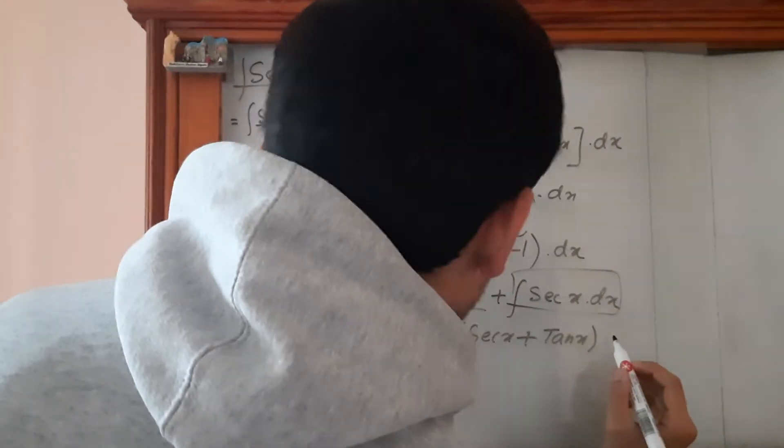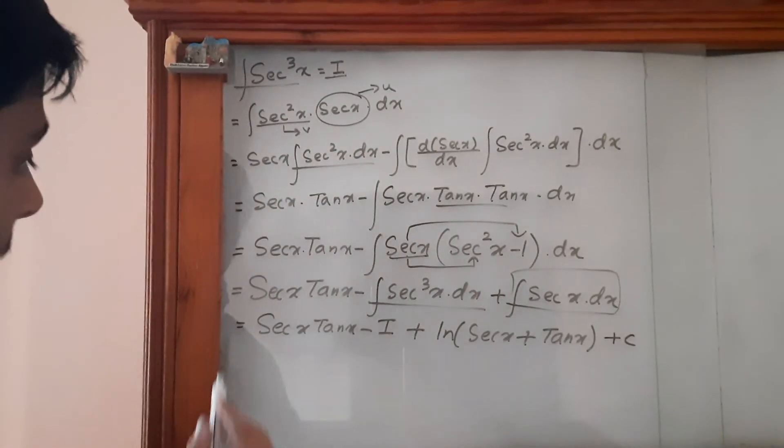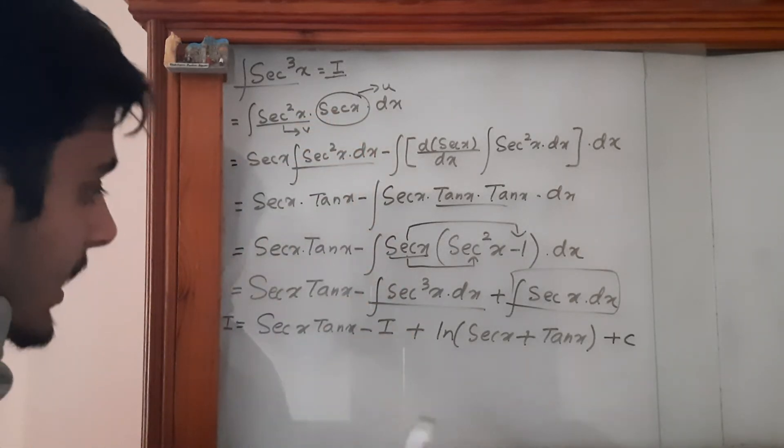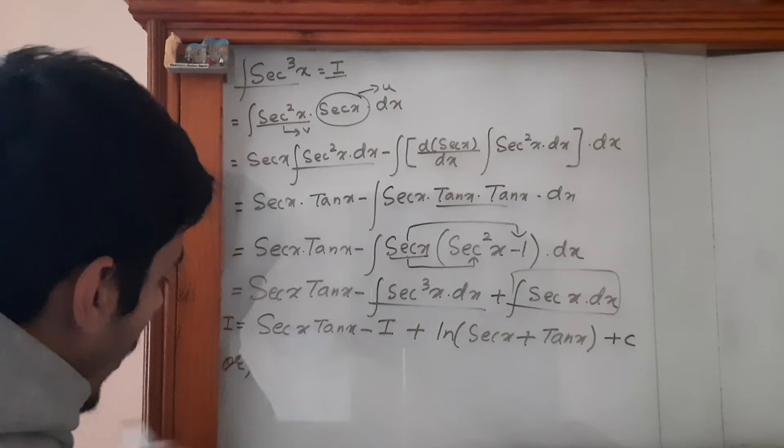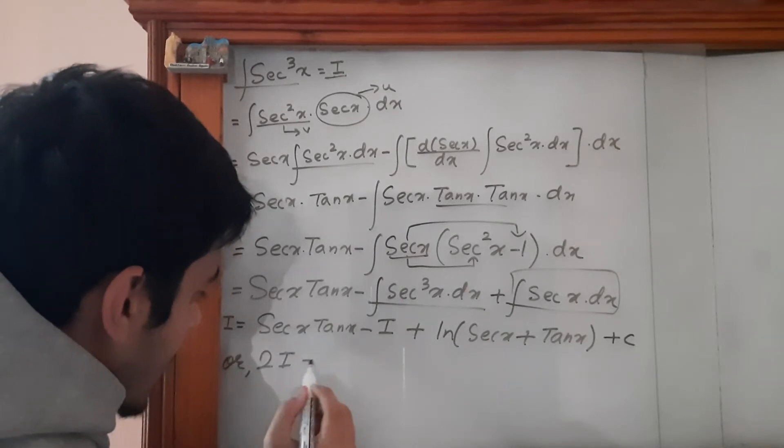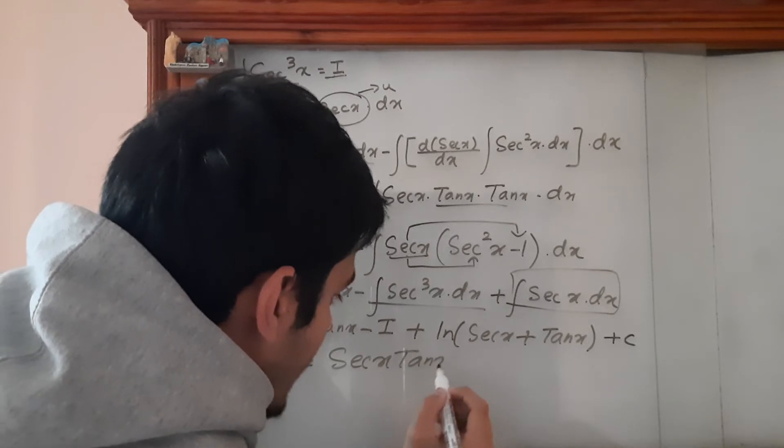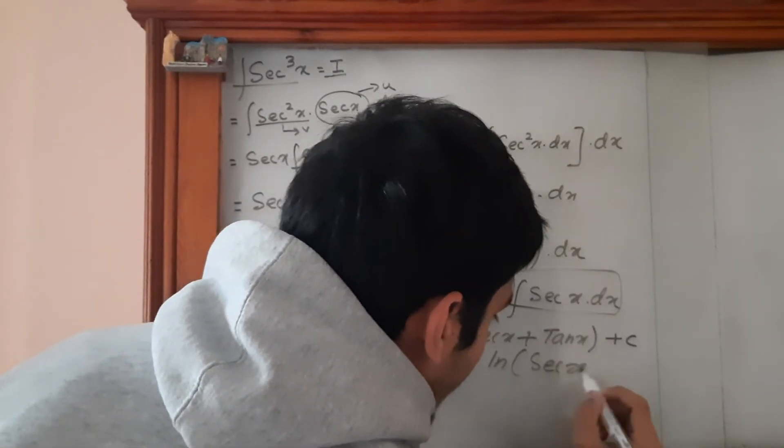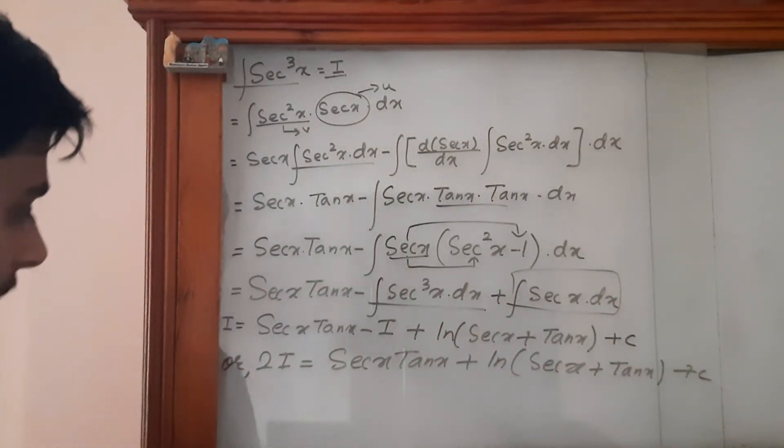We add the integration constant, so I = secx·tanx - I + ln(secx + tanx) + c. When I goes to the other side, 2I = secx·tanx + ln(secx + tanx) + c.